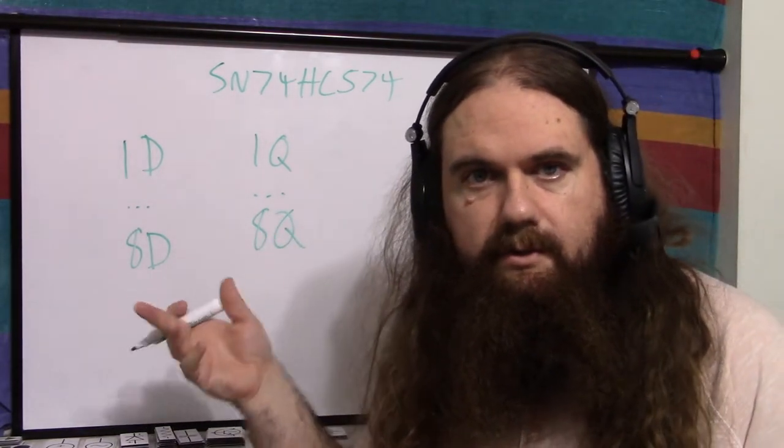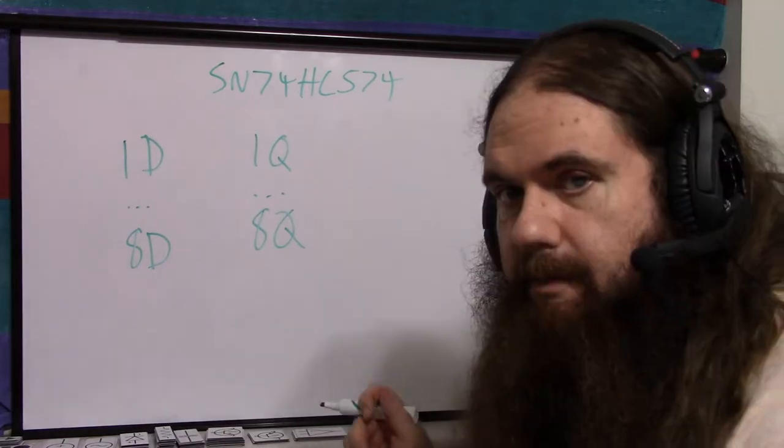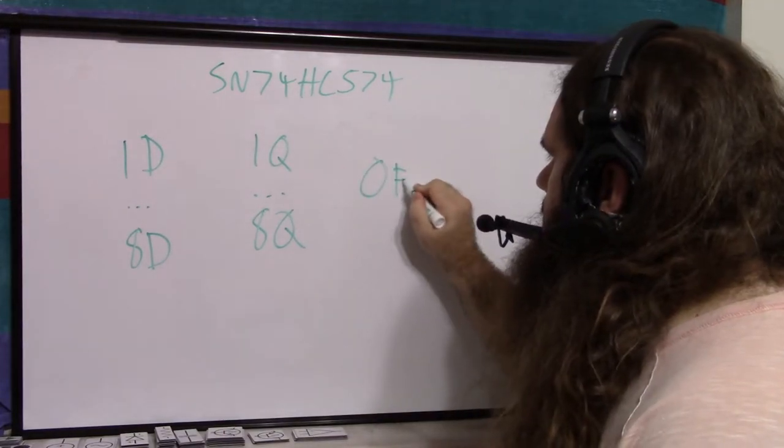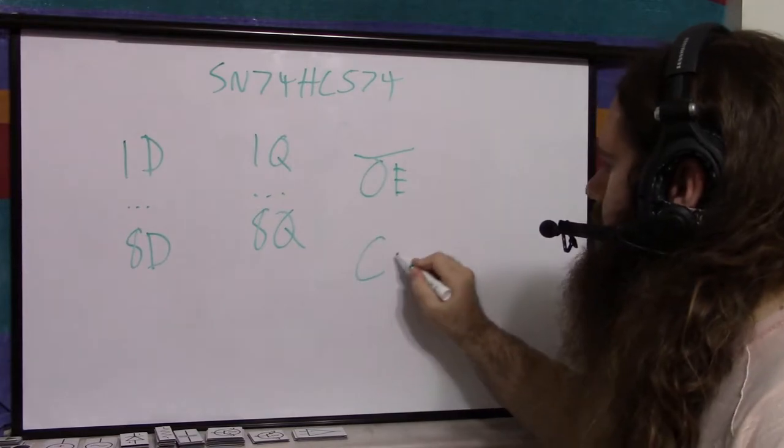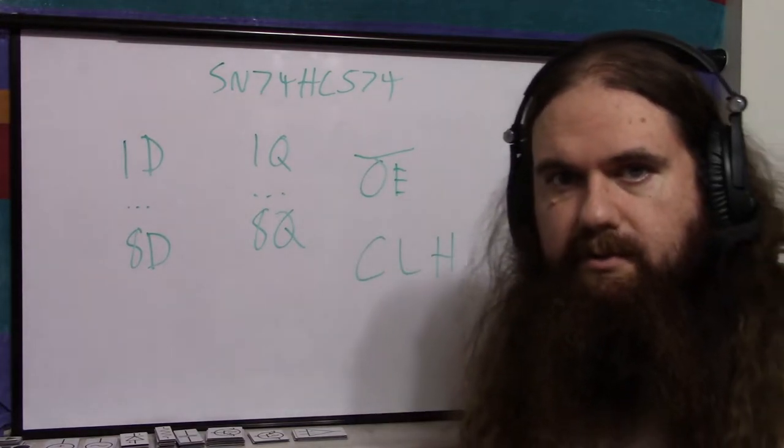You usually see Q as the result of some digital logic thing. Beyond that, there's only two pins. You've got output enable, which is active low, and you've got clock, which is active high, so it's rising edge.